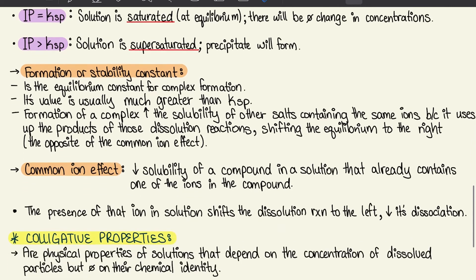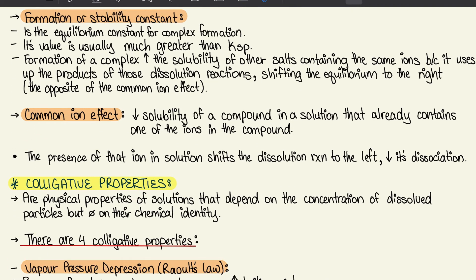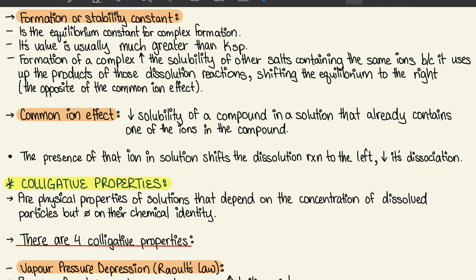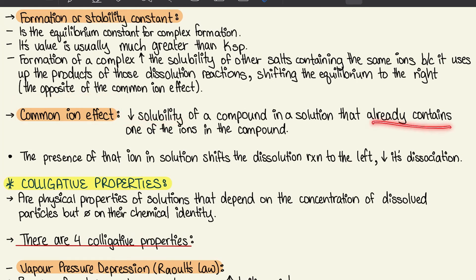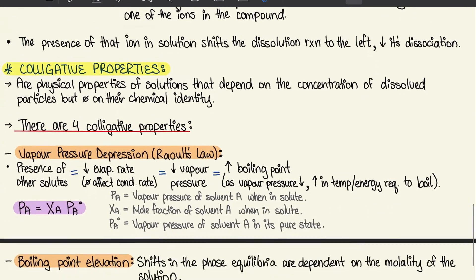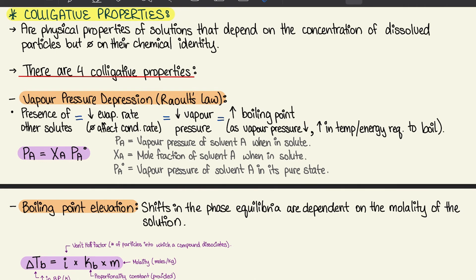The formation constant is the equilibrium constant for complex ion formation and is usually much greater than Ksp. Complex ion formation increases solubility by consuming dissolution products, shifting equilibrium to the right — the opposite of the common ion effect. The common ion effect decreases solubility by shifting the dissolution reaction to the left.